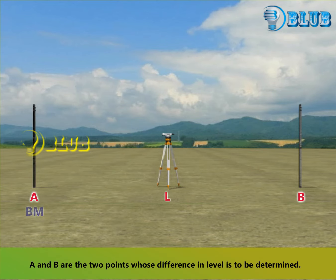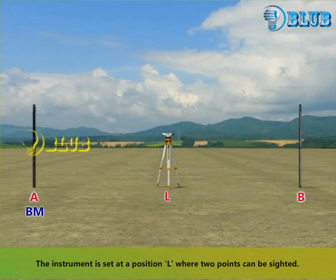A and B are the two points whose difference in level is to be determined. The instrument is set at a position L where both points can be sighted.